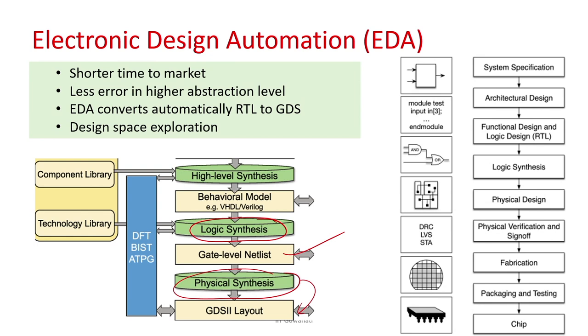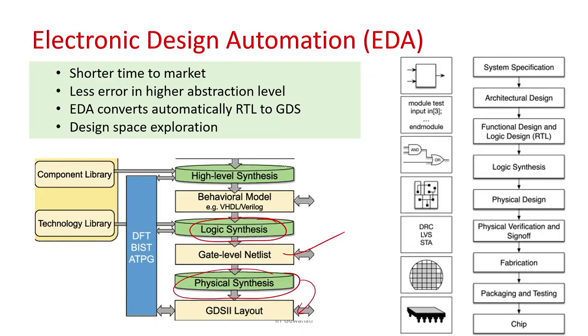In recent times there is huge interest in bringing design to an even higher abstraction level. Instead of writing code at register transfer level, what if you write your specification in C or C++ or Python? There is software which can convert your C/C++ code into a register transfer level design. Effectively, you are writing something at software level — C/C++ has no hardware description — but the software will automatically convert it into hardware represented at register transfer level. That process is called high level synthesis.